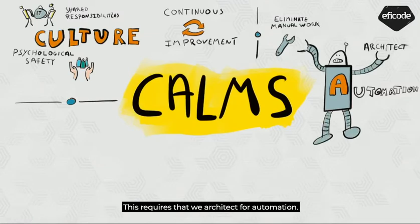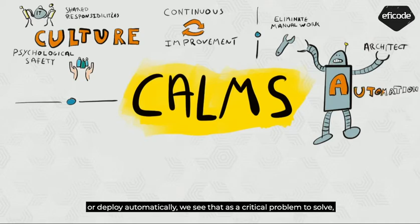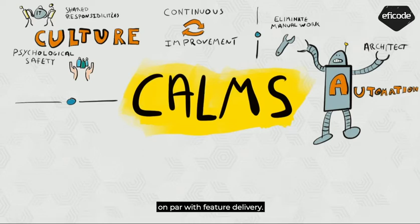This requires that we architect for automation. When our applications are difficult to test, run, or deploy automatically, we see that as a critical problem to solve, on par with feature delivery.